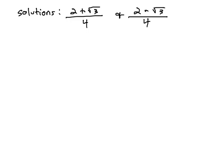In this video, we're going to use a method known as reverse complete the square in order to find the quadratic that, when it's solved, gives us the solutions 2 plus root 3 over 4 and 2 minus root 3 over 4.